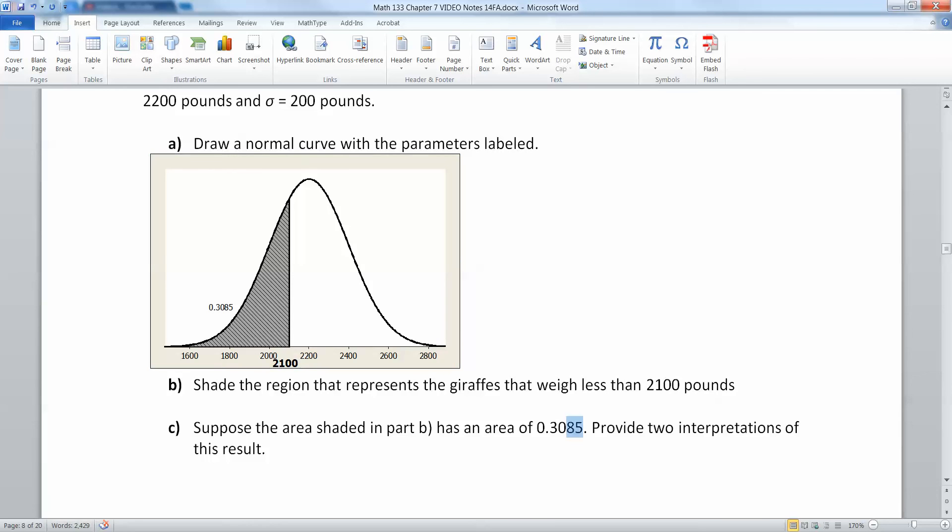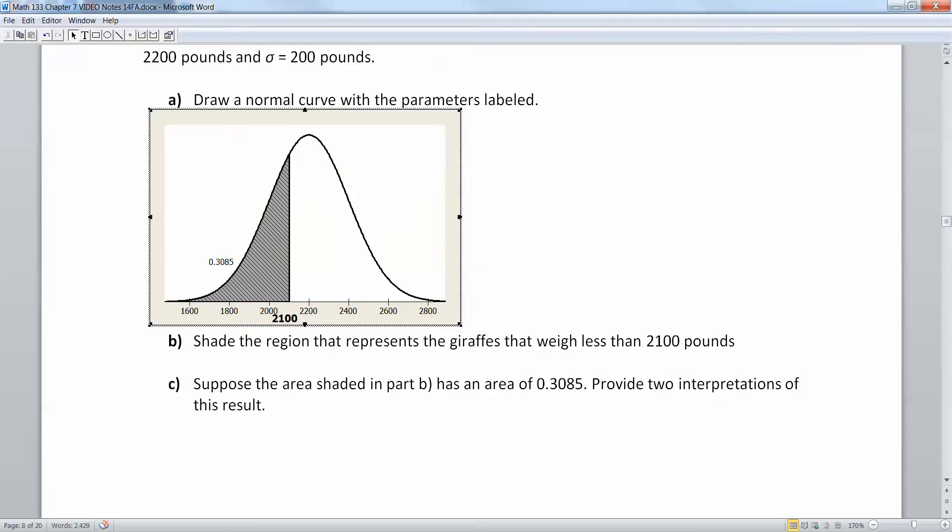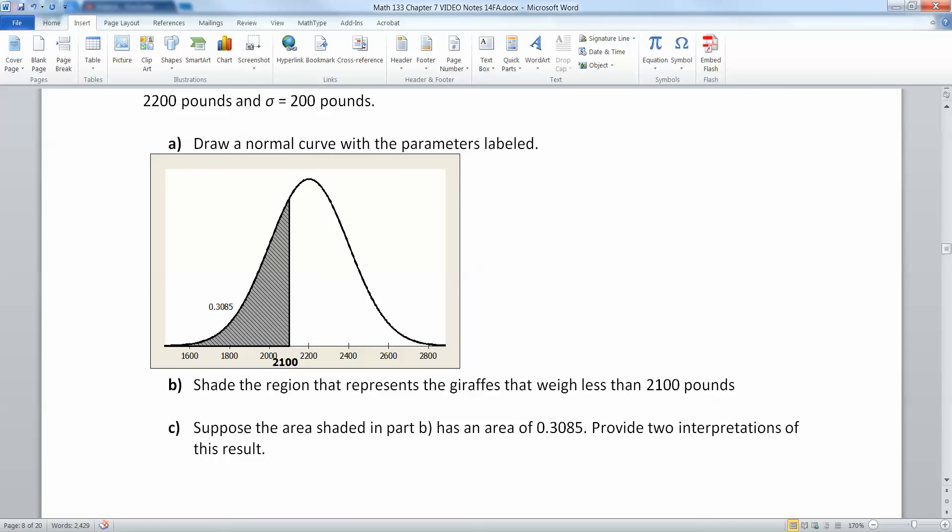Then I have this line here at 2100 which is the exact halfway point between 2000 and 2200. For some reason I happen to know that area is 0.3085. We always when we draw these curves put the areas up on top and the X values down below like the 2100 pounds.